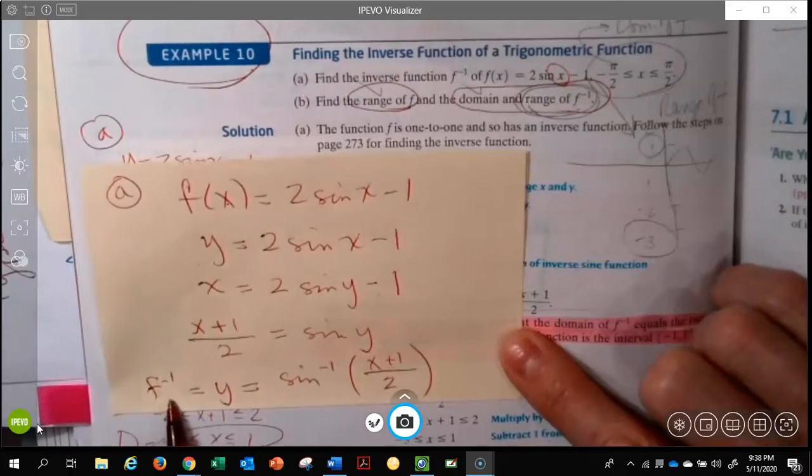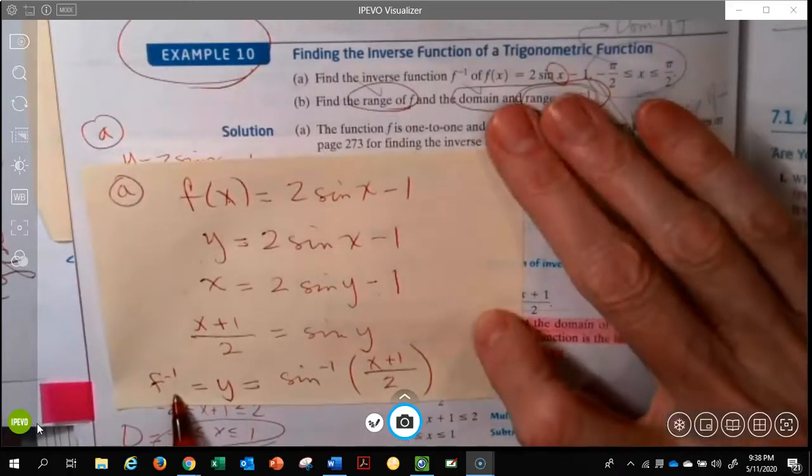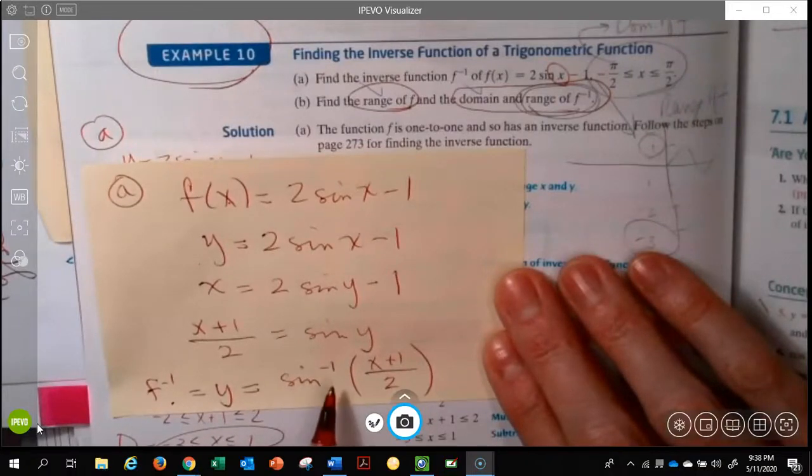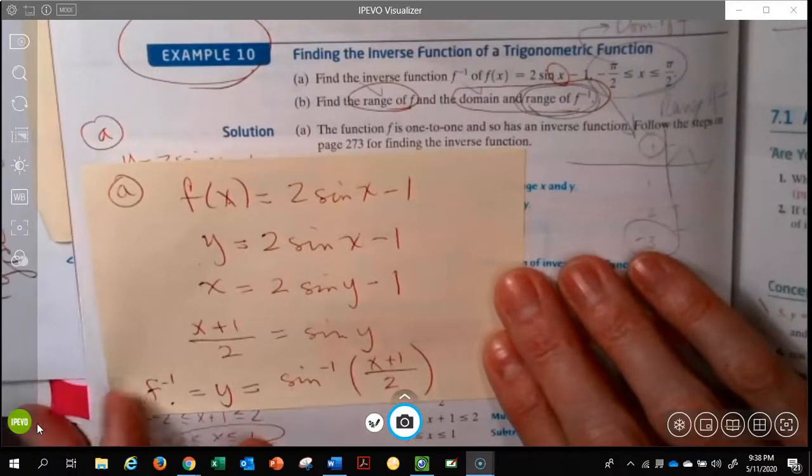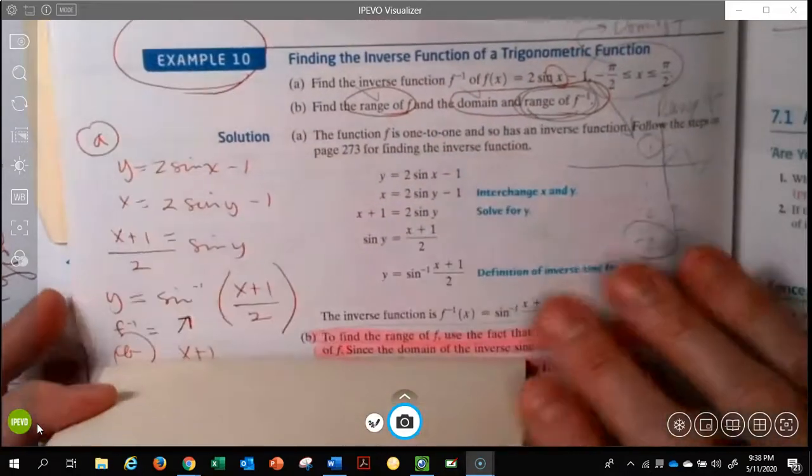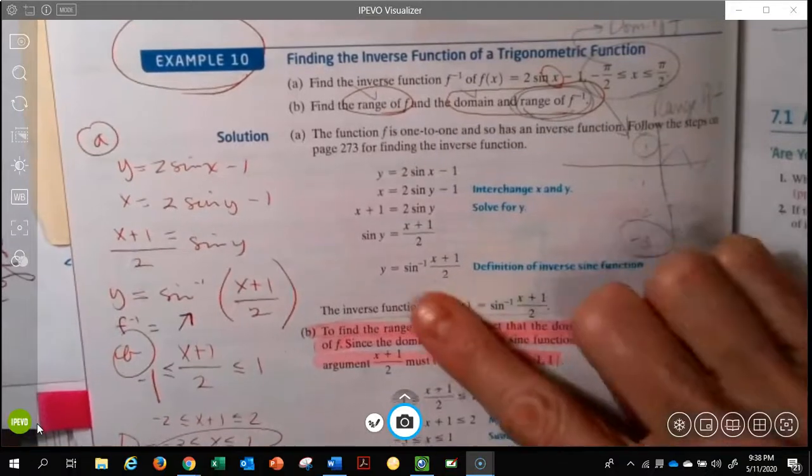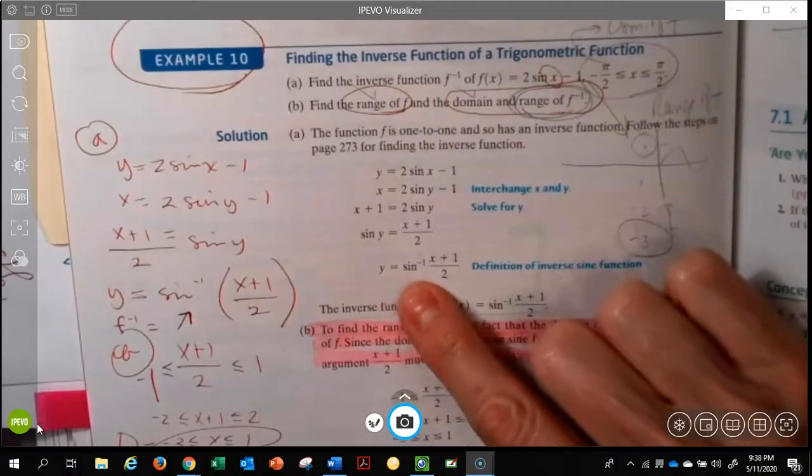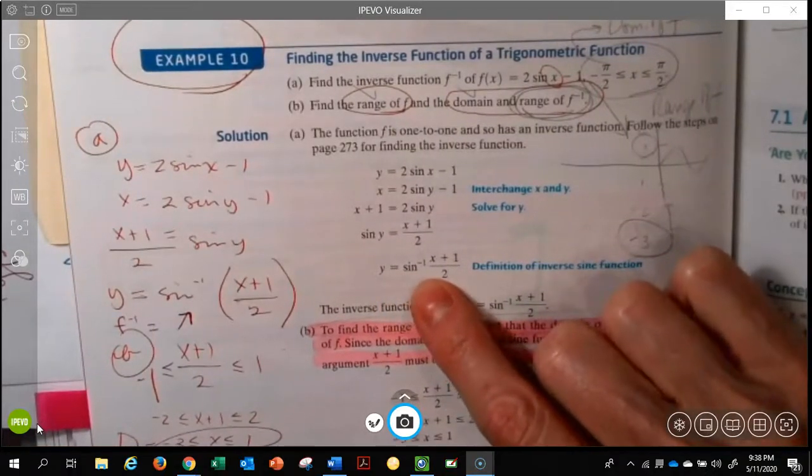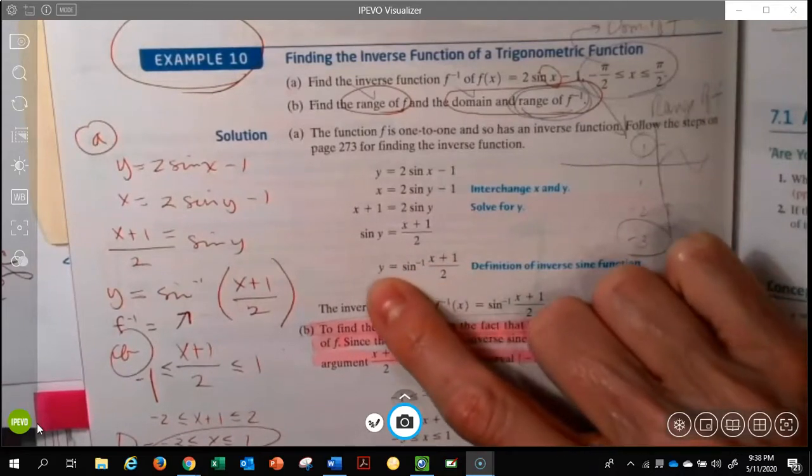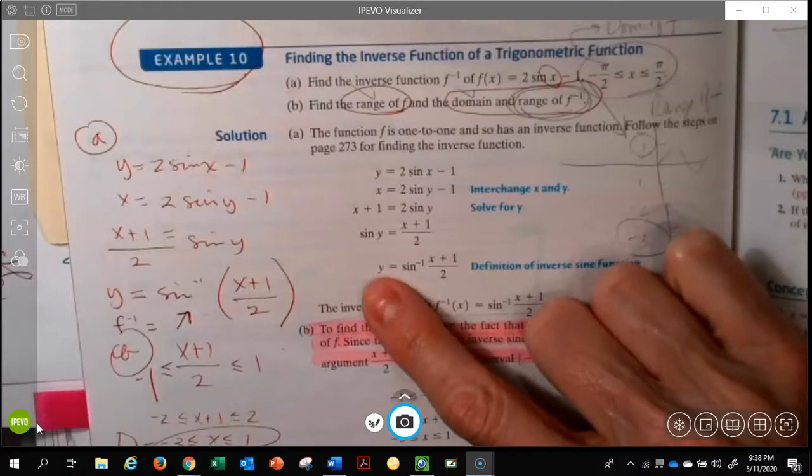And my final step is to take this y and replace it with inverse. And so, my inverse of the function that I started with is the inverse of sine, and it's of x plus 1 over 2. And when you look at this, they left it as the y. So when you're doing your homework, follow their pattern. What are they asking?